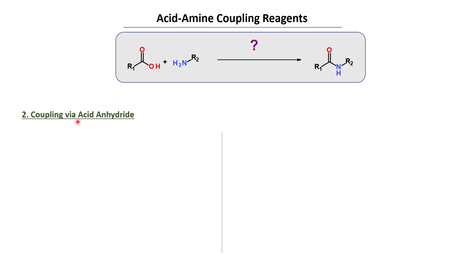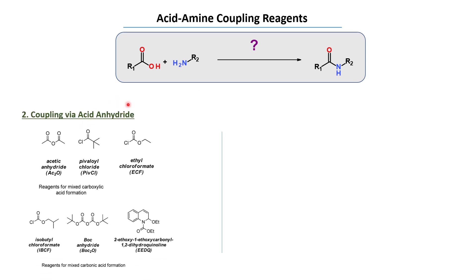Another method is coupling via Acid Anhydride. We can convert this acid to the mixed anhydride using acetic anhydride, phosphoryl chloride, or ethyl chloroformate to activate this acid and get the amide.